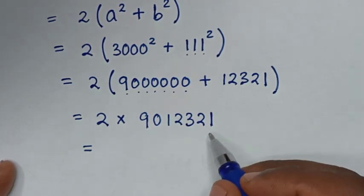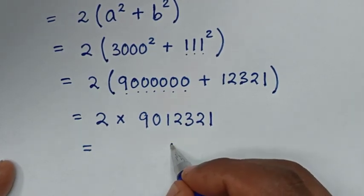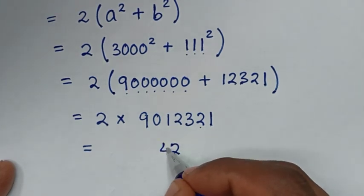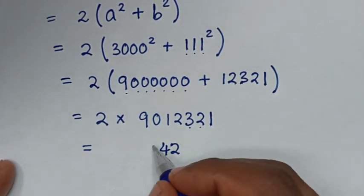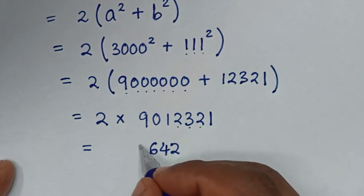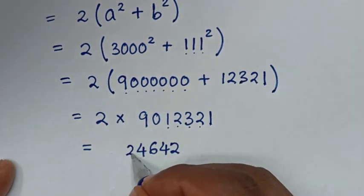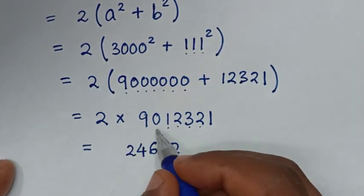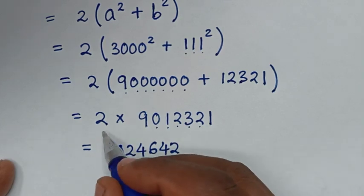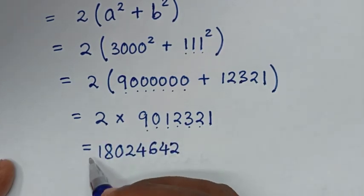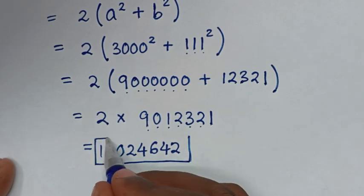So, 2 times 9,012,321: 2 times 1 is 2, 2 times 2 is 4, 2 times 3 is 6, 2 times 2 is 4, 2 times 1 is 2, 2 times 0 is 0, 2 times 9 is 18. So this is our final answer: 18,024,642.